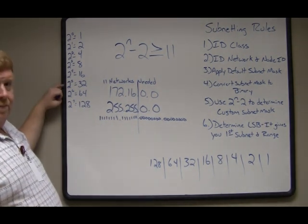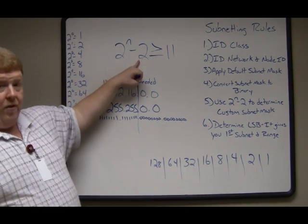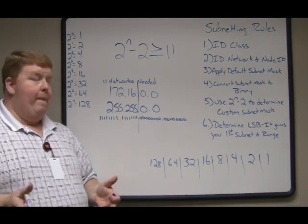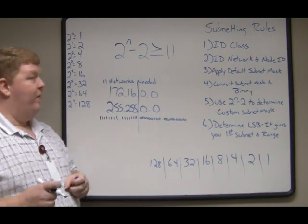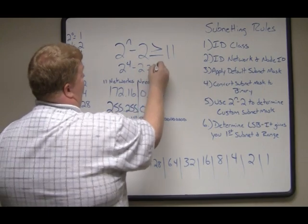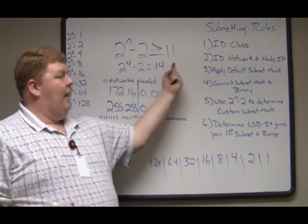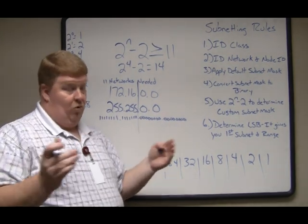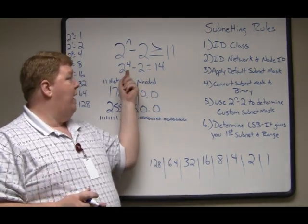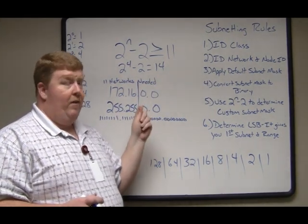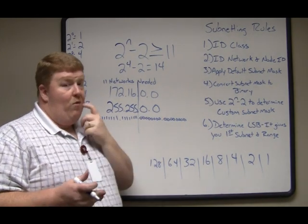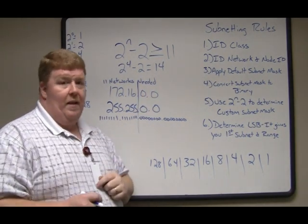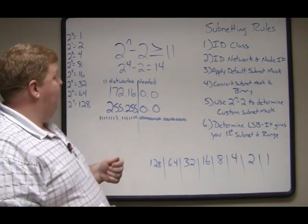We could also use two to the fifth because 32 minus 2 equals 30, which is also greater than or equal to 11. Which one to use is really up to you — this tells us how many networks we're going to have. If we do 2 to the fourth minus 2, that equals 14, giving us three networks to grow into. If we expect the company to expand greatly, we might go to 2 to the fifth, giving us 30 networks and more room to grow.